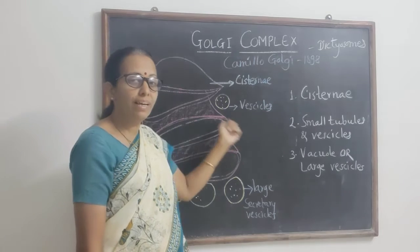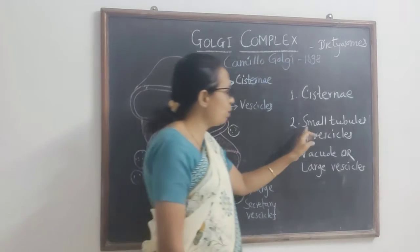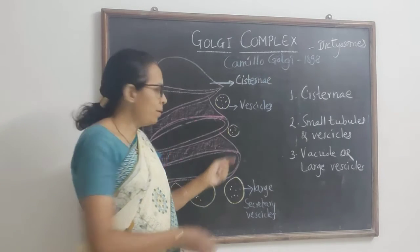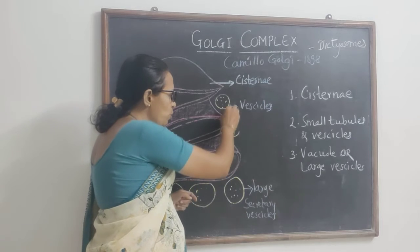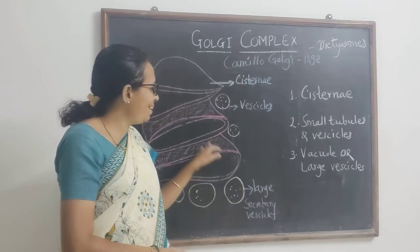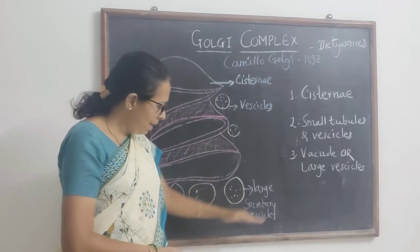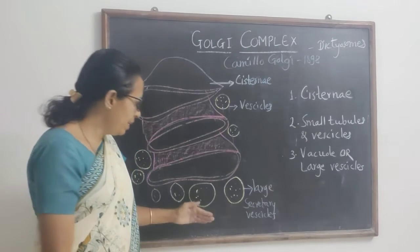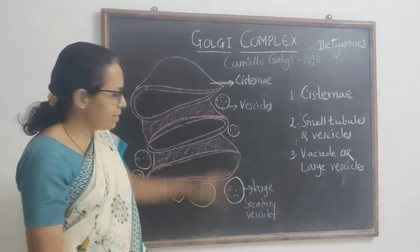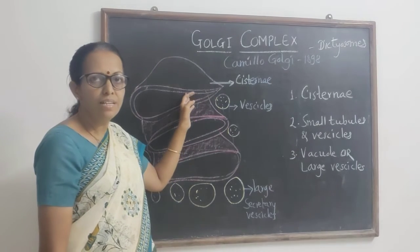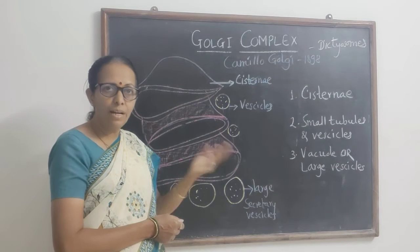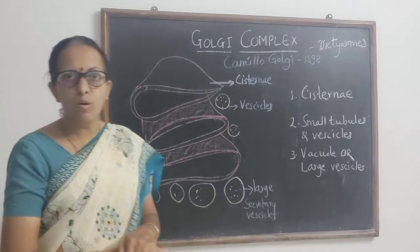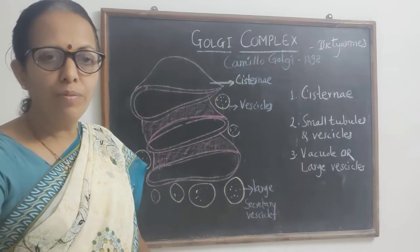Inside this membranous body, fluid is present. The other components are small tubules or vesicles — in top view they appear spherical, but they extend inside as tubules. These small tubules are associated with the Golgi cisternae. At the distal end, large vesicles called vacuoles are present. The two ends are given different names: the cis end and the trans end, which are different in orientation.